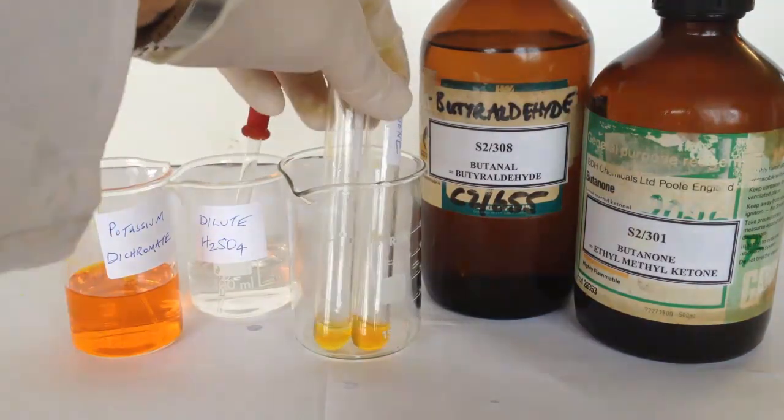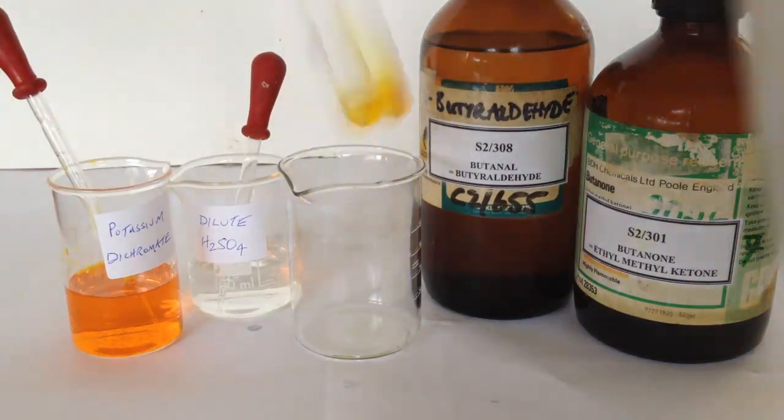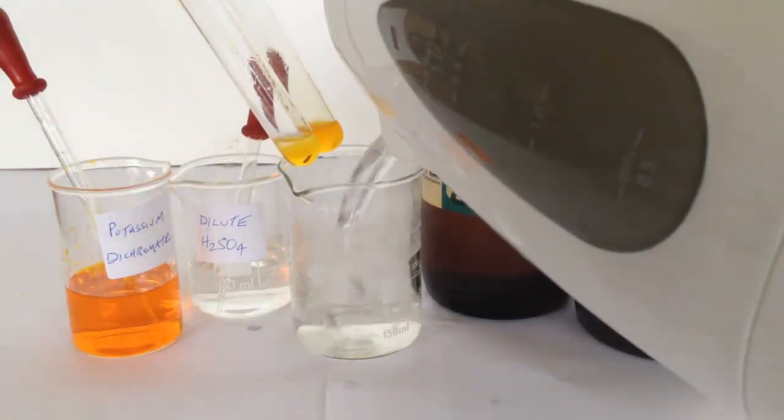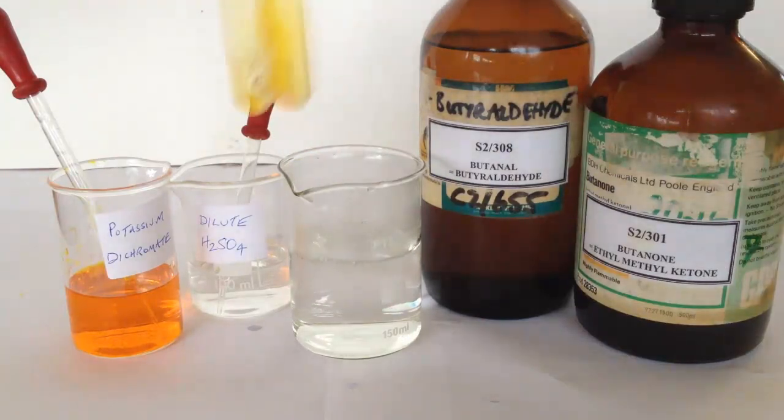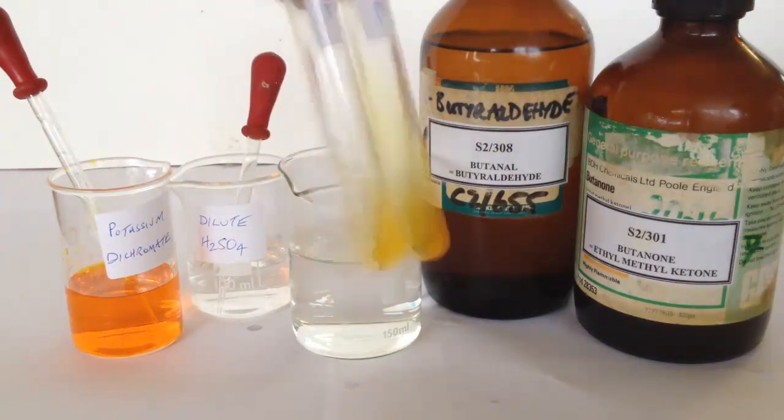So we now have the aldehyde and ketone mixed with acidified potassium dichromate. All I need to do is give them a good shake and place the test tubes in a hot water bath.